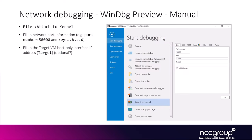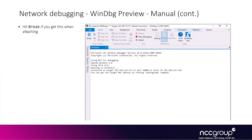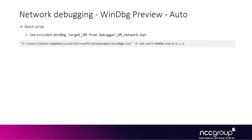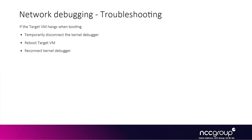Once the target VM is waiting, use WinDBG attach to kernel, specifying the port number and key — you don't need to specify the target VM IP address. WinDBG may show a window without input initially, but hitting break will show it's connected successfully. This can be automated with a batch script. If the target VM hangs when attaching, disconnect the kernel debugger, reboot the target VM, and try reconnecting — at some point it should work.